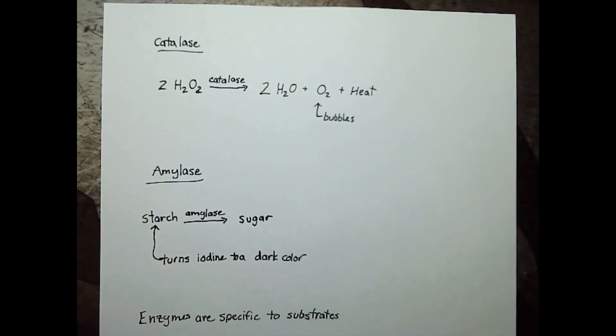For this experiment, one of the enzymes we'll be looking at is catalase. Catalase will break down hydrogen peroxide into water and oxygen gas. Normally this would happen over time anyway; that's why hydrogen peroxide has an expiration date.